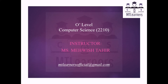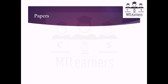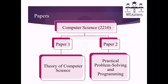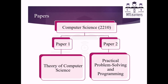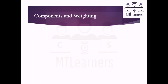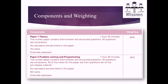Now let's move towards the outline of O Level Computer Science 2210. The subject papers included in Computer Science 2210 are Paper 1 and Paper 2. Paper 1 is Theory of Computer Science, and Paper 2 is about Practical Problem Solving and Programming.